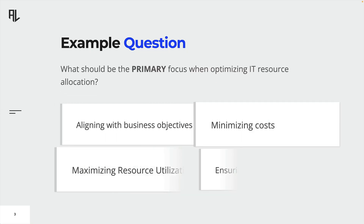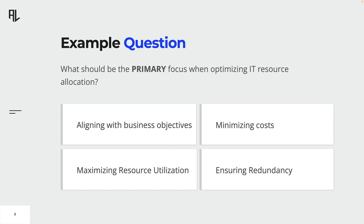Each question in the CGEIT exam has a stem, which is the actual question or an incomplete statement. Sometimes even a little scenario might be provided to add more context to the question. The questions are all presented in a multiple-choice format, meaning you will have a few answer choices to choose from for each question. Your task is to select the correct or best answer from the options provided. This means sometimes more than one answer is correct, but only the best answer is supposed to be selected.